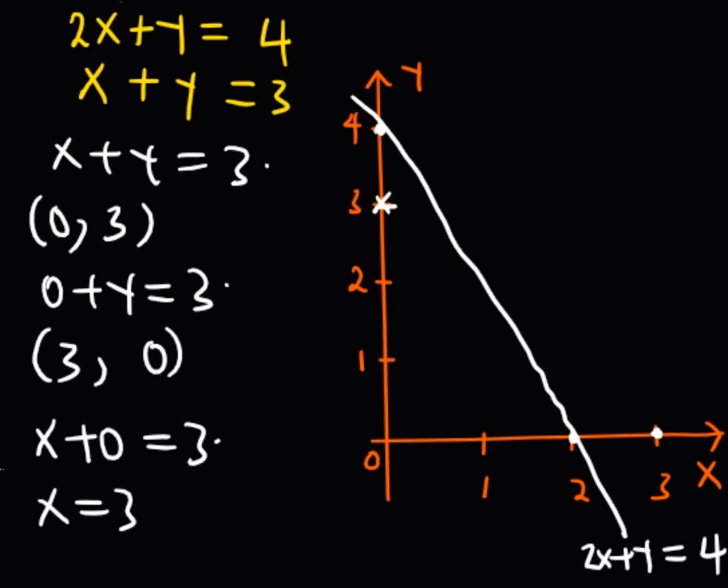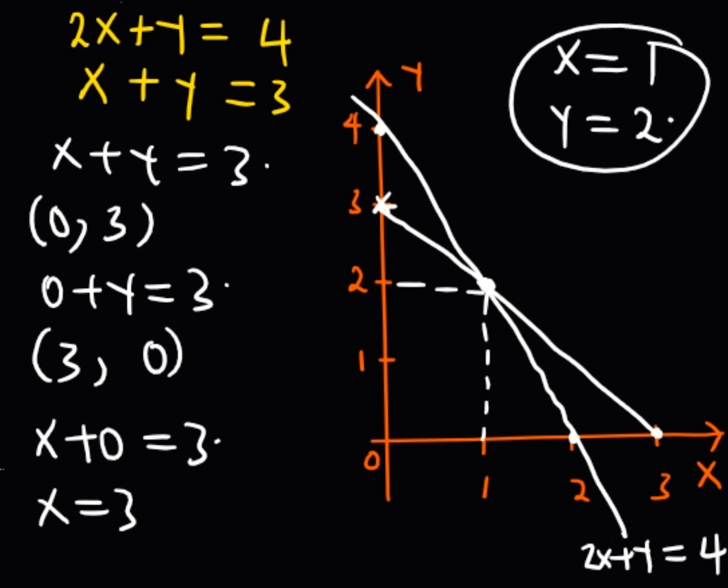I connect the two points to draw the second line. The lines intersect where x = 1 and y = 2. These are the solutions to our simultaneous equations.